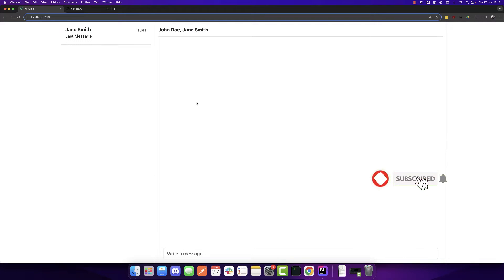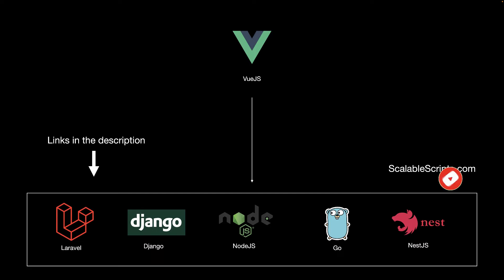In this video, we will build a simple chat app using Vue.js and socket.io. Before I show you the app, I would like to remind you that this video can be combined with other videos. So if you want to use Vue.js with any of these backend frameworks, check the links in the description of this video. Also make sure to check our website, scalablescripts.com. Now let's see the app that we will build.